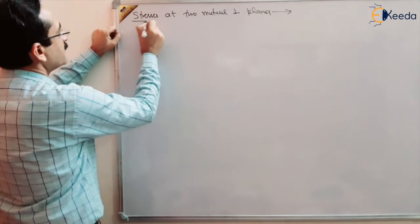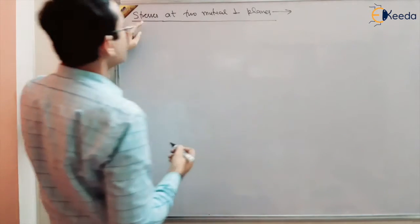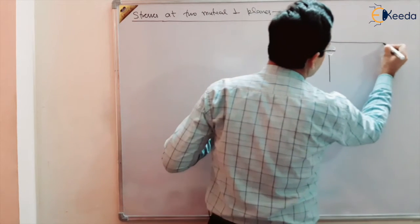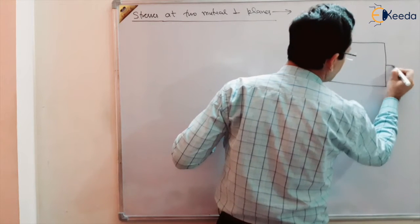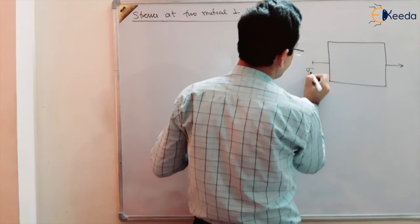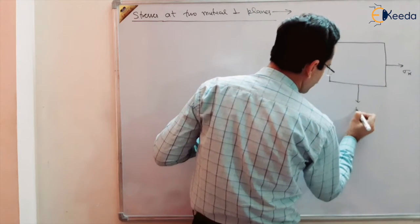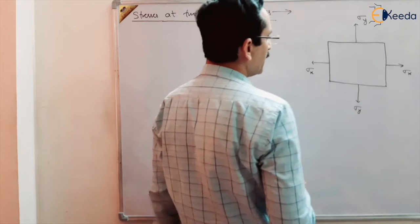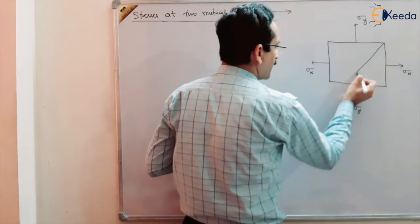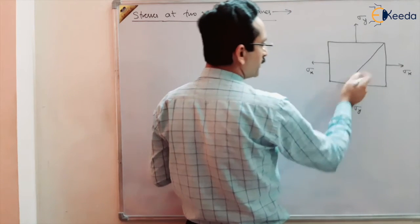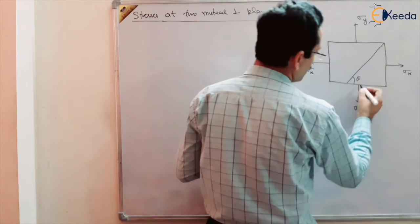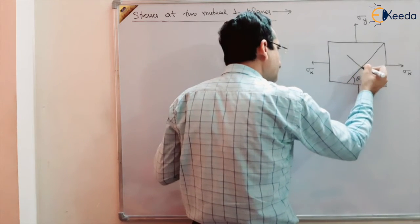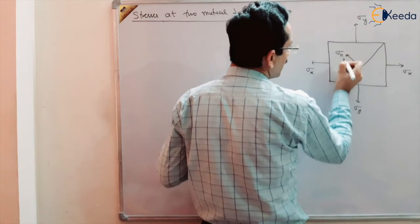Stresses are direct stresses — when we say stresses, it means direct stresses acting at two mutual perpendicular planes. The stress element has sigma X applied in one plane and sigma Y on the perpendicular plane, with no shear stress applied for the time being. We want to find out the stress at an angle theta to the horizontal, specifically the normal stress sigma N and shear stress sigma T on this oblique section.